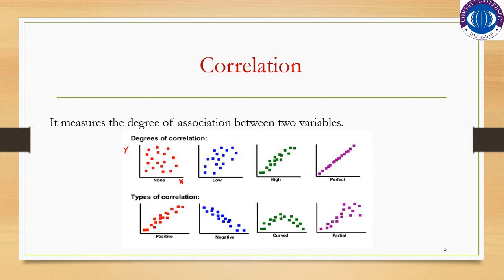There is also curved correlation between two variables, and there is partial relationship between two variables. These are the types of correlation.